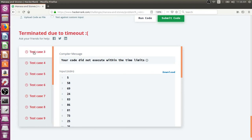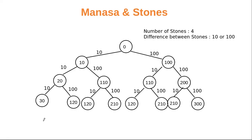The problem is that too many branches are created with too much duplication. For four stones with differences 10 and 100, we can see that 120 was calculated three times, 210 was calculated multiple times, and only 30 and 300 were calculated once. There are too many unnecessary repeated calculations coming from various paths.